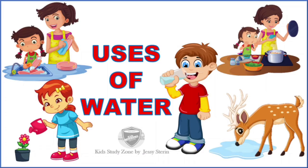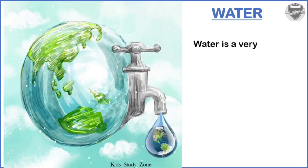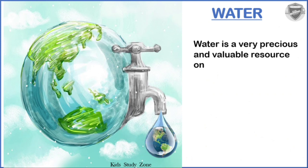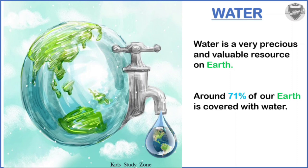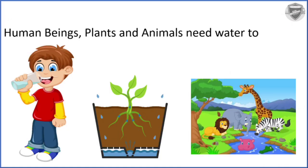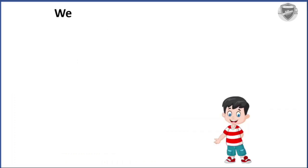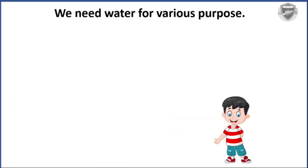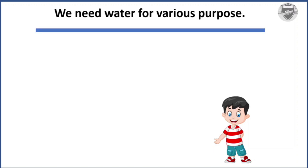In this video, you will learn about different uses of water. Water is a very precious and valuable resource on earth. Around 71 percent of our earth is covered with water. Human beings, plants, and animals need water to survive. We need water for various purposes.